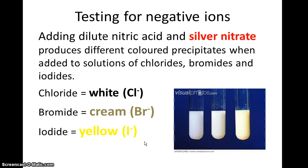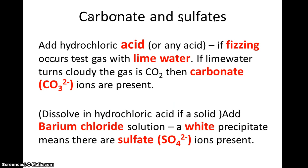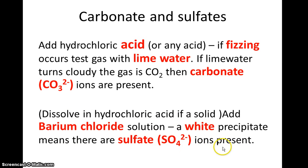The other negative ions you may be testing for are carbonates and sulfate. To identify carbonate, add acid and observe fizzing — fizzing would suggest it's a carbonate. To confirm, you need to verify the gas being generated is carbon dioxide, which we do using lime water. To identify the sulfate ion, we use barium chloride, and with that we get a white precipitate — so you either get a white precipitate or you don't.